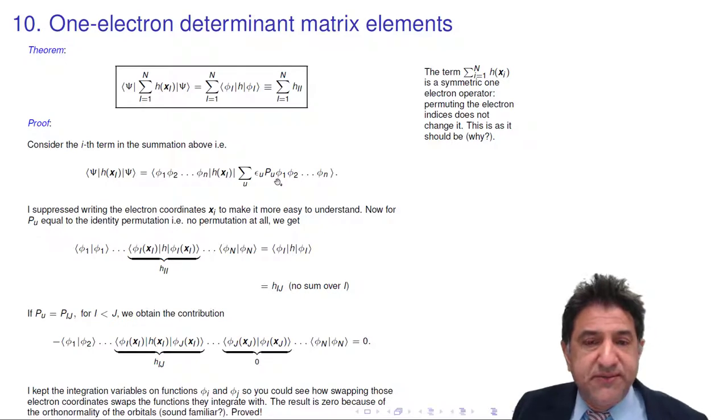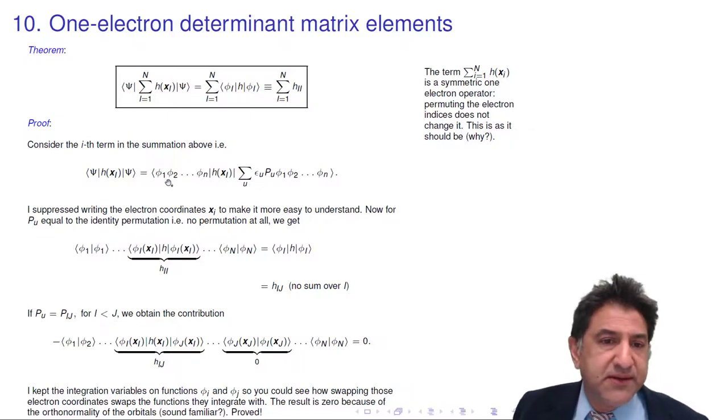Now let's consider, as usual, all possible permutations. First, pu being the identity. So if pu is a do-nothing permutation, we will get phi 1 integrated with phi 1, phi 2 integrated with phi 2, phi n integrated with phi n. But wait.